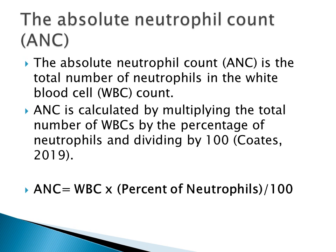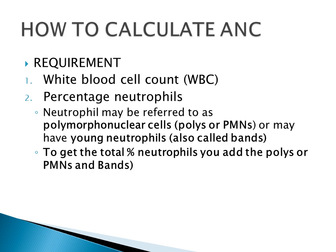Note that the percent of neutrophils can sometimes be expressed as PMNs, plus what are called the young neutrophils — the bands. To calculate the absolute neutrophil count, we require the white blood cell count and the percentage of neutrophils, which may also be referred to as polymorphonuclear cells (PMNs), and may also include the young neutrophils called the bands.